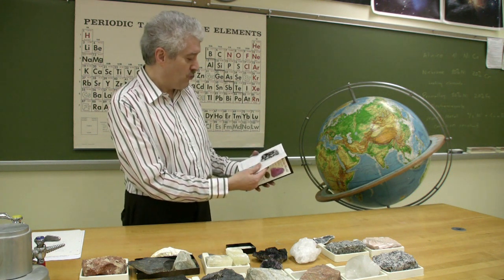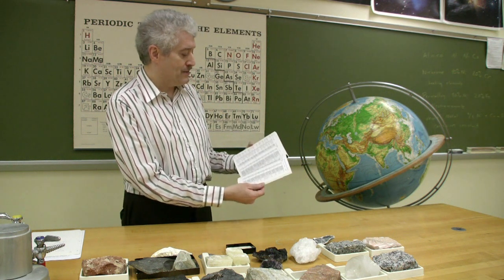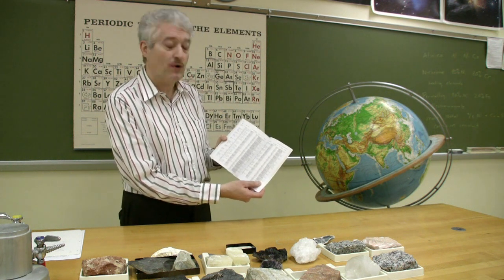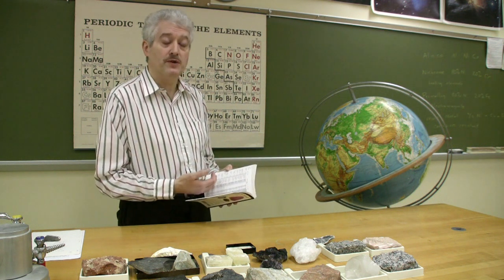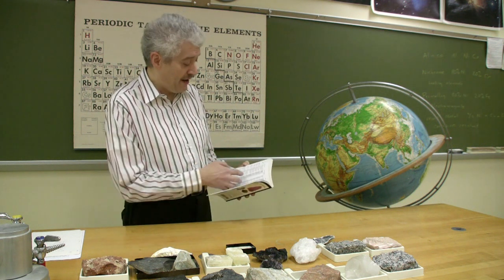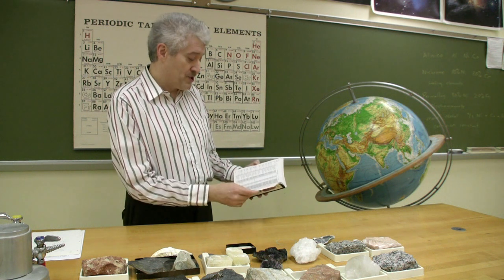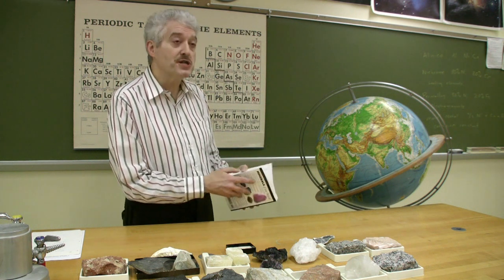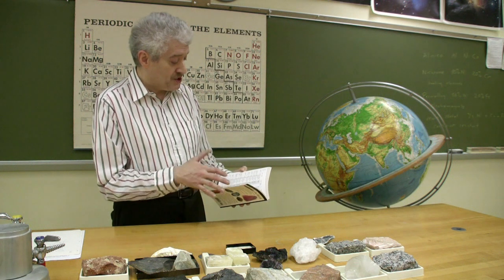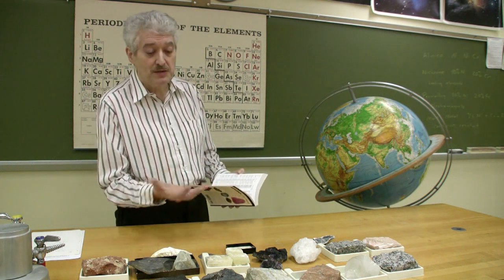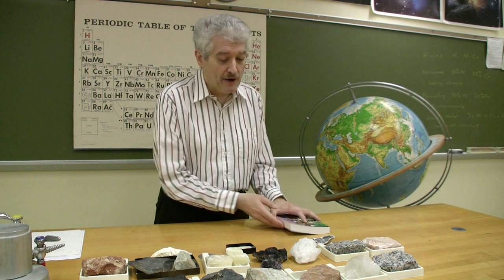It has full-color photographs of minerals. Most importantly, in the back, it has a table of mineral properties. So if you have an unknown mineral and you want to identify it, you look at some properties, go through the table until you see something similar, and chances are, unless you've got some oddball mineral, you've identified what you have.